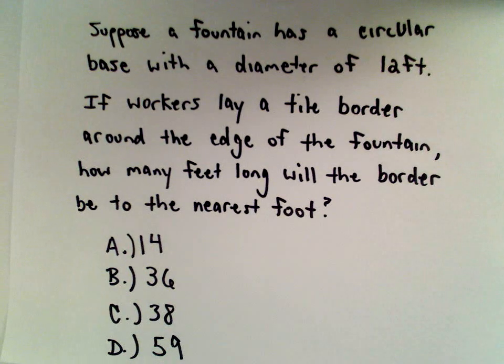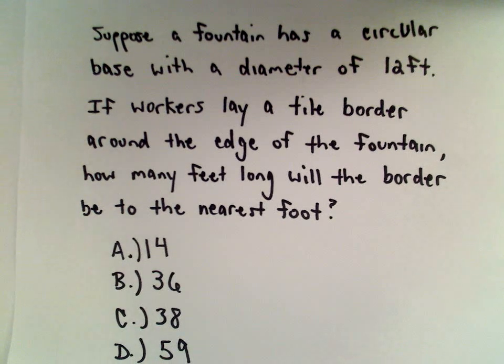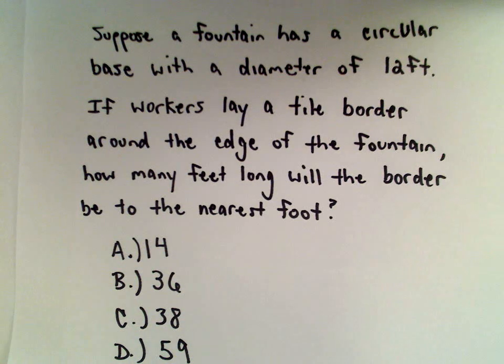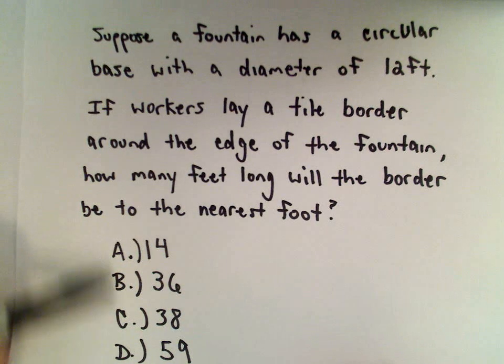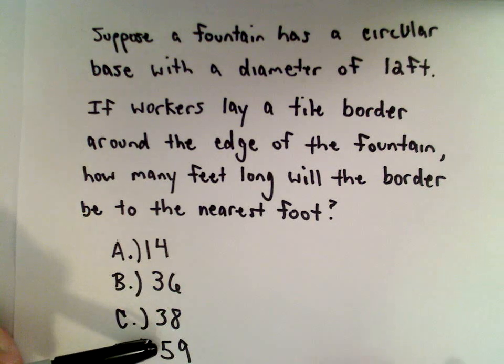Suppose that we have a fountain with a circular base with a diameter of 12 feet. If workers lay a tile border around the edge of the fountain, we want to know how many feet long will the border be to the nearest foot. So we have four choices here: 14 feet, 36 feet, 38 feet, or 59 feet.